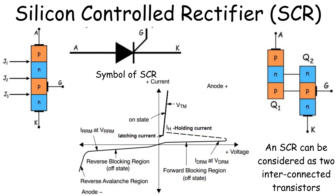Working Principle and IV Characteristics. The bottom part of the image displays the current-voltage (IV) characteristics of the SCR. Initially, with no gate current, the SCR is in the forward blocking region, meaning it's off and doesn't conduct any significant current. When we apply a positive gate current, the device switches to its ON state by allowing current to flow from the anode to the cathode. This transition is known as latching. After latching, even if we remove the gate signal, the SCR will remain on as long as the current through it stays above a certain threshold, known as the holding current, represented as I_H in the graph.